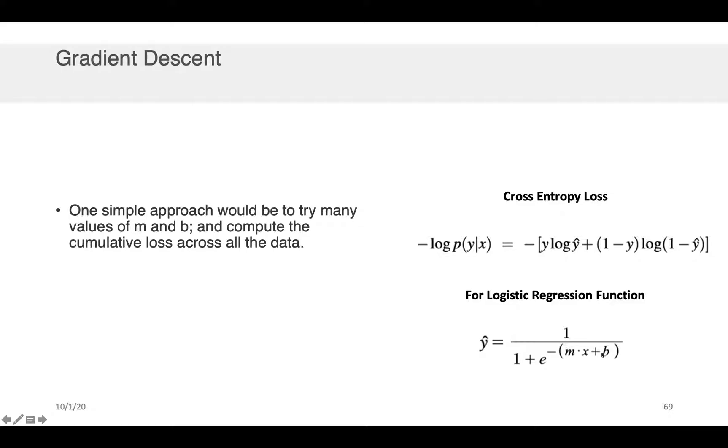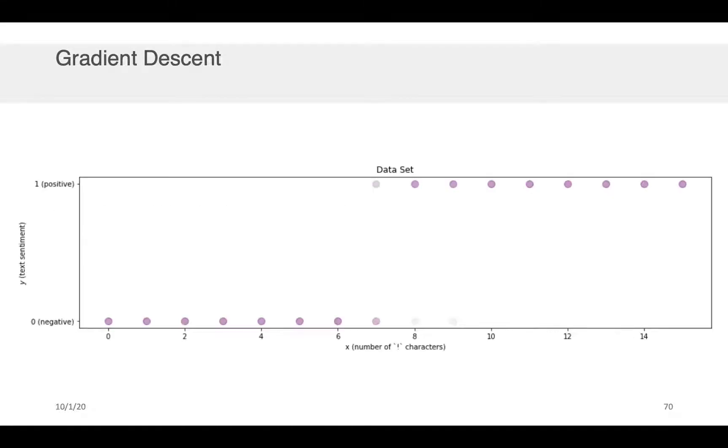I could pump all my x values in, get all the y hats, take all the y and y hat pairs and sum up the loss, for example. And I could check that and then I could try it for other values of m and b.